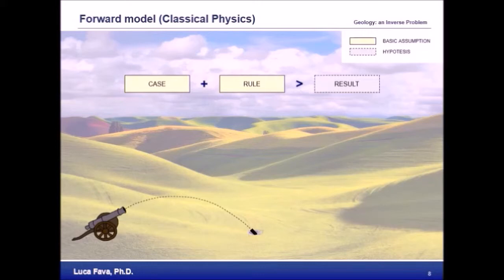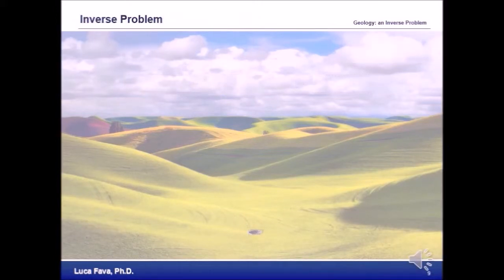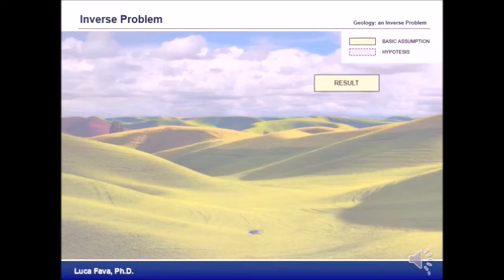To explain the difference between a forward model and an inverse model: an inverse problem starts, instead, with the result. In our example we can imagine a researcher walking in the countryside and finding a hole in the ground created by a cannon bullet.